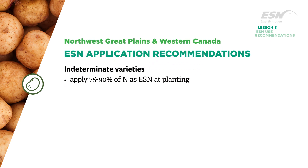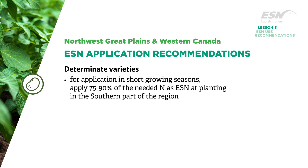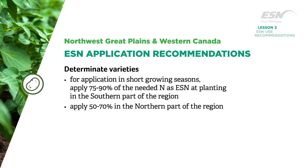In the Northwest Great Plains and Western Canada, apply a 75 to 90 percent ESN blend at planting for indeterminate varieties. For determinate varieties and/or short growing seasons, apply 75 to 90 percent of the needed nitrogen as ESN at planting in the southern part of the region, and 50 to 70 percent in the northern part. Apply the balance as a soluble nitrogen source; in most cases further nitrogen is not required.